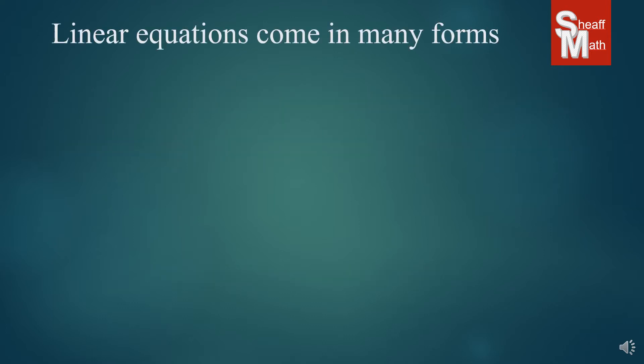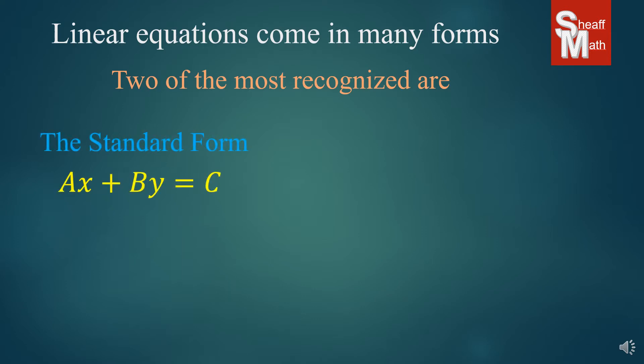Linear equations come in many forms, and there are two very recognizable forms that we deal with a lot in algebra. The first one is called standard form, and this is where we have some number of x and some number of y, then the equal sign, and then some number after it. So Ax + By = C.